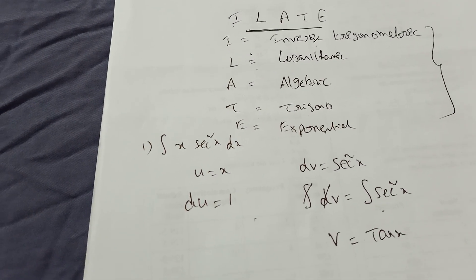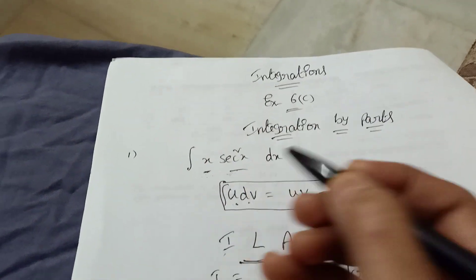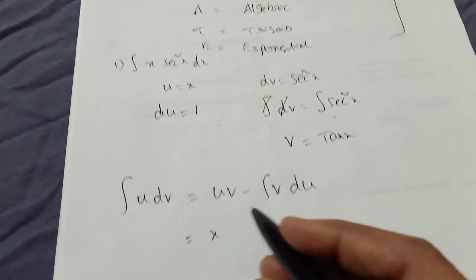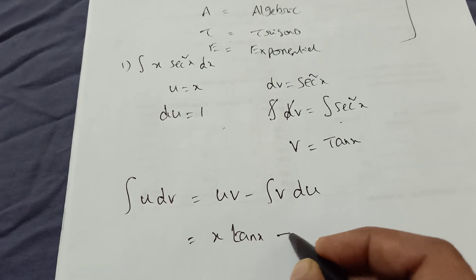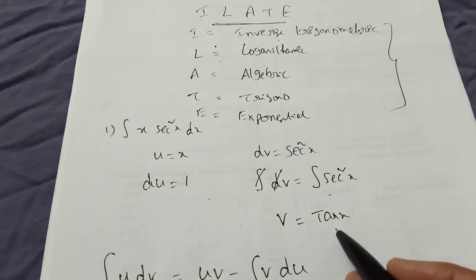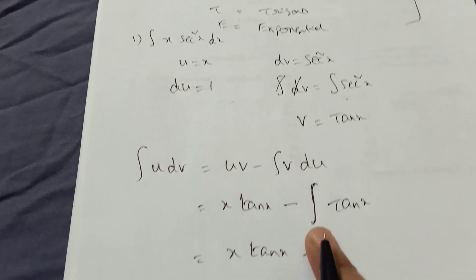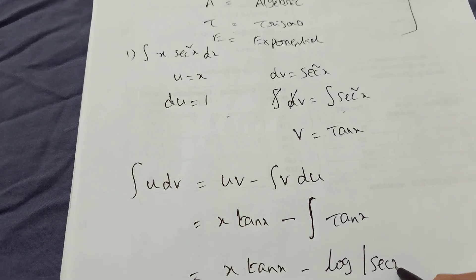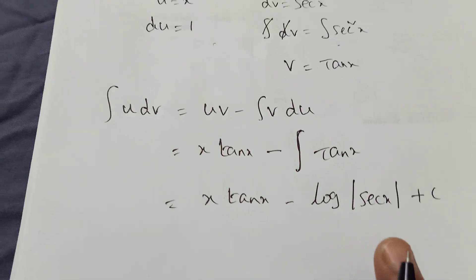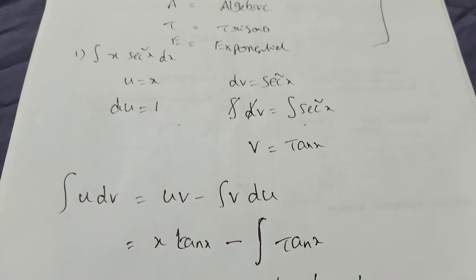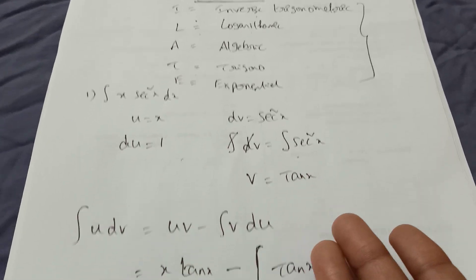Now apply the formula: ∫u·dv = u·v − ∫v·du. What is u? x. What is v? tan x. So we get x·tan x − ∫tan x dx. Integration of tan x is log|sec x|. Therefore the answer is x·tan x − log|sec x| + c. Problem completed. Just split u and dv, then apply the formula — easy!